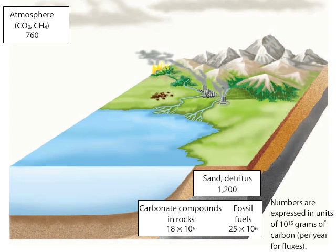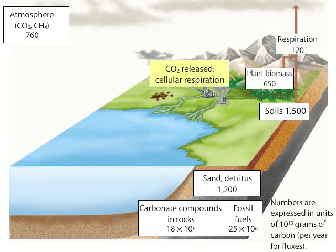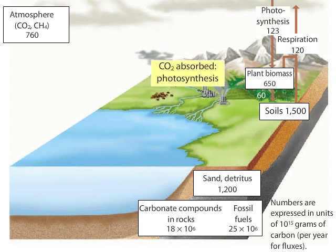On land, most of the carbon available to organisms is stored in soils. During cellular respiration, soil organisms and other terrestrial biota release carbon in the form of carbon dioxide to the atmosphere. The opposite happens during photosynthesis, when plants take carbon dioxide from the atmosphere.